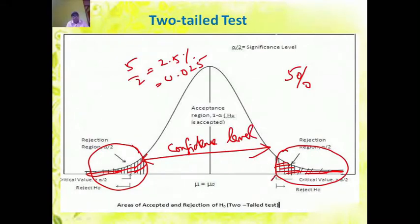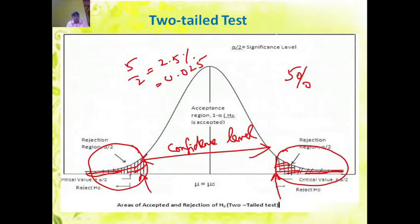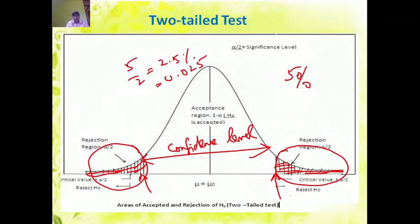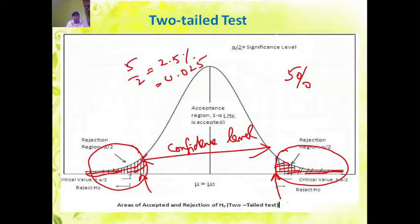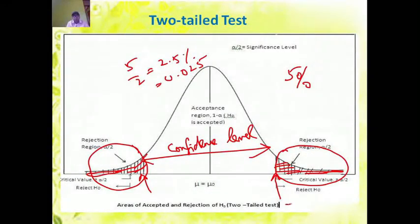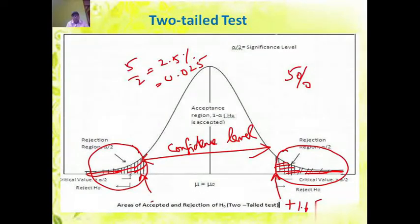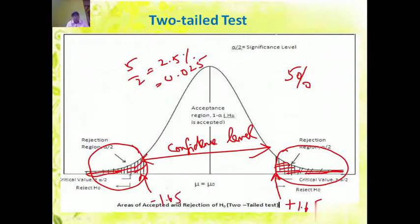These are called critical values — the extreme values for rejection or acceptance of the null hypothesis. For example, in the case of 5% level of significance, this value is plus 1.65 sigma; all values exceeding this come in the rejection area. And minus 1.65 sigma — all values below this are also in the rejection area. This diagram shows areas of acceptance and rejection of the null hypothesis for a two-tail test.